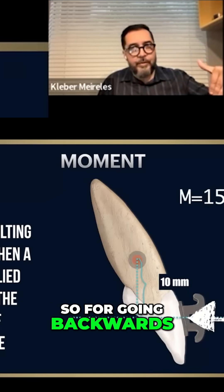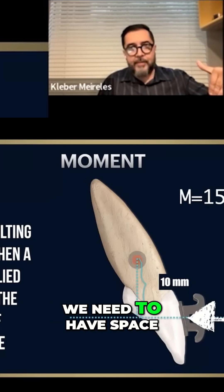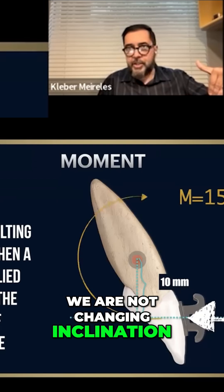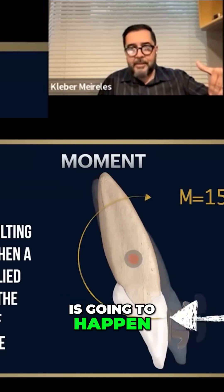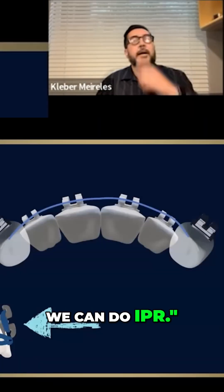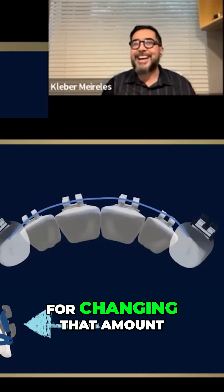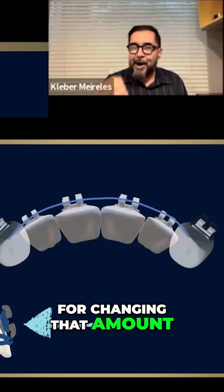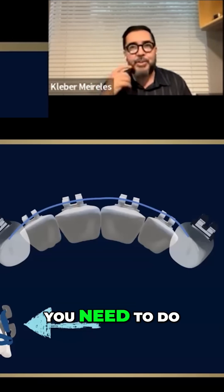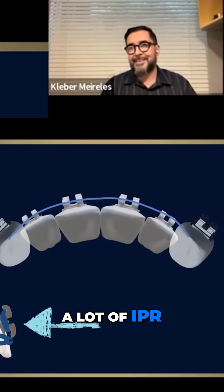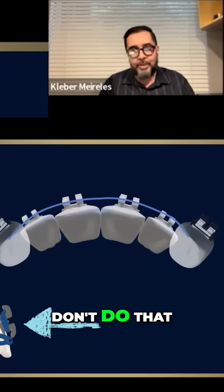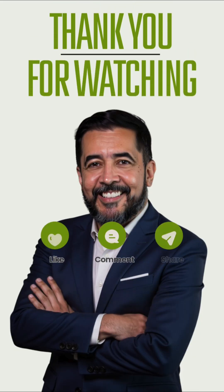So for going backwards with the crown, we need to have space. Otherwise, we are not changing the inclination. So this is what is going to happen to change the inclination. Yes, we can do IPR, but for changing that magnitude of inclination, you need to do a lot of IPR. I really don't recommend it — don't do that.